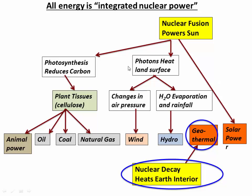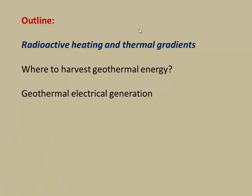Most other sources kind of come from nuclear fusion in the Sun that trickles down through the system. But geothermal actually comes from nuclear decay in Earth's interior and is made when heat is trying to escape from the Earth. In this class we'll talk about radioactive heating and thermal gradients in the Earth's interior, then where to harvest geothermal energy, and finally how we actually make electricity from geothermal energy.